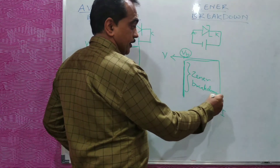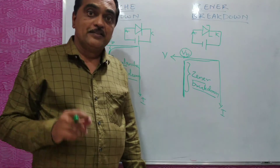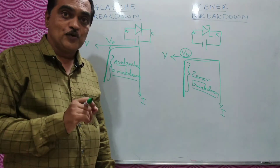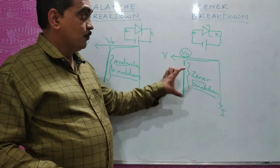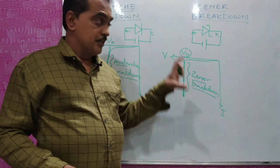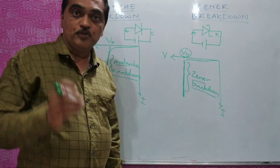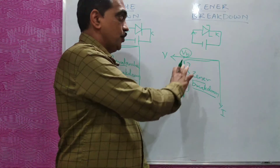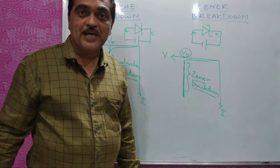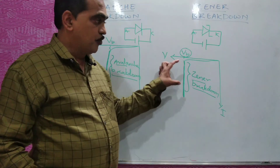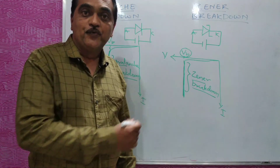So in zener breakdown, there is no collision of atoms and no collision of electrons. That's why there is no heat produced, and because there is no heat produced, the device will not get damaged. Zener diode is used in reverse bias in most applications. Its main application is that it can be used as a voltage regulator, because of the property where at a constant voltage the current goes on increasing.